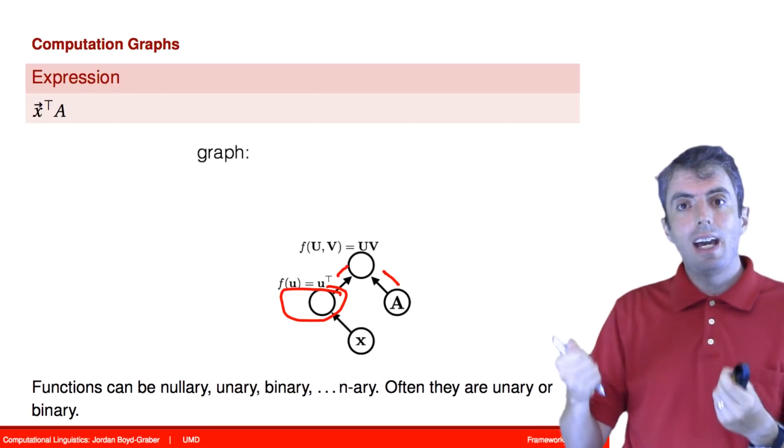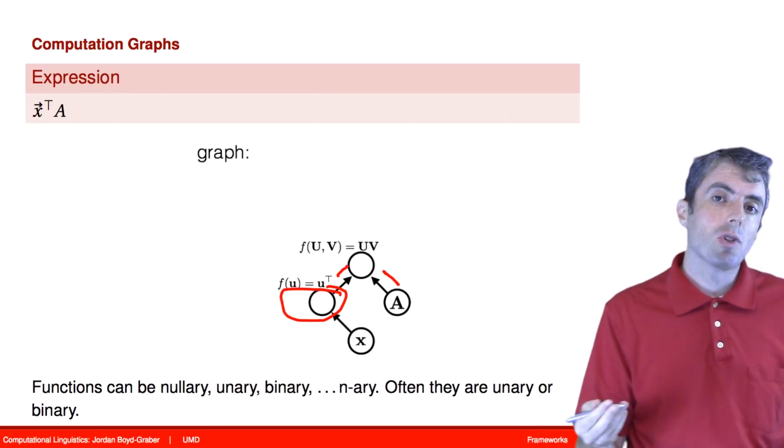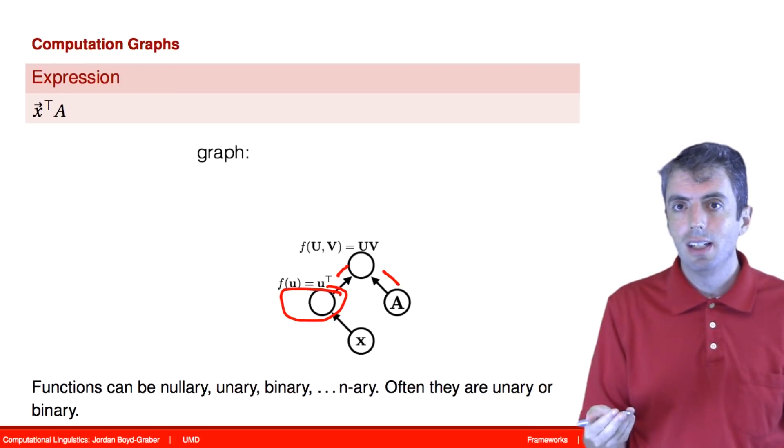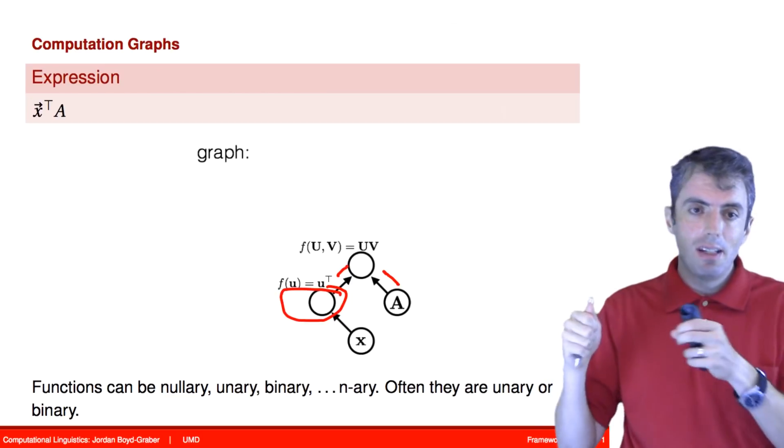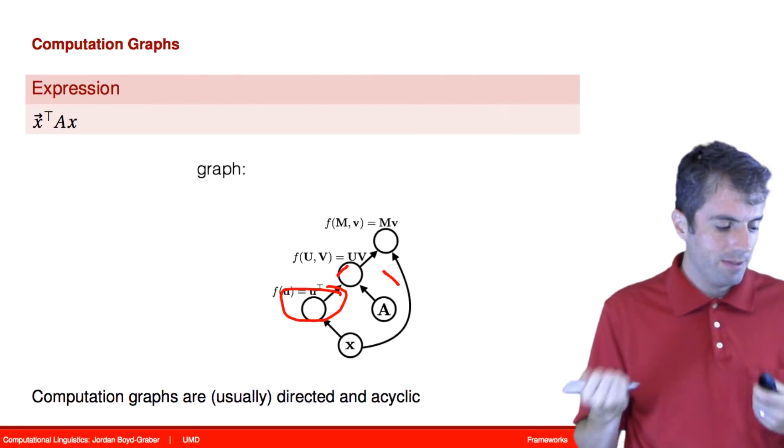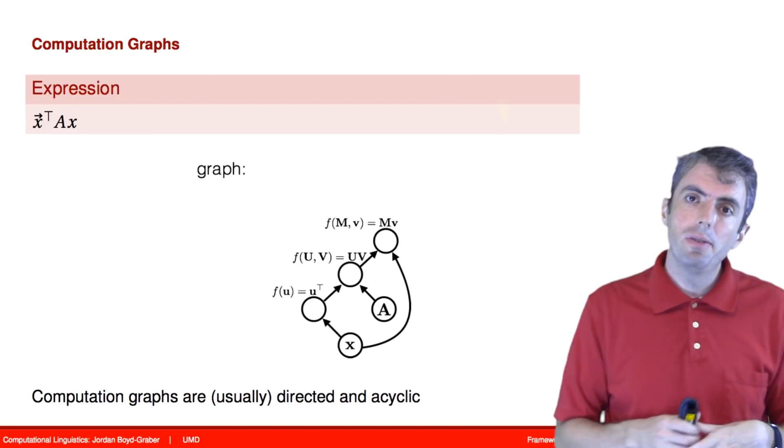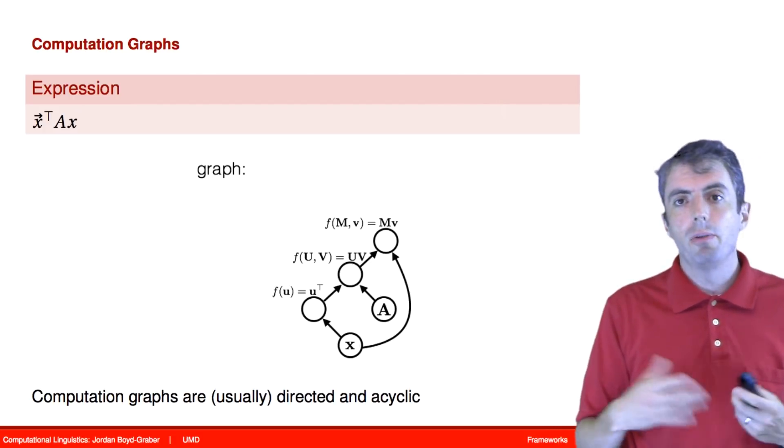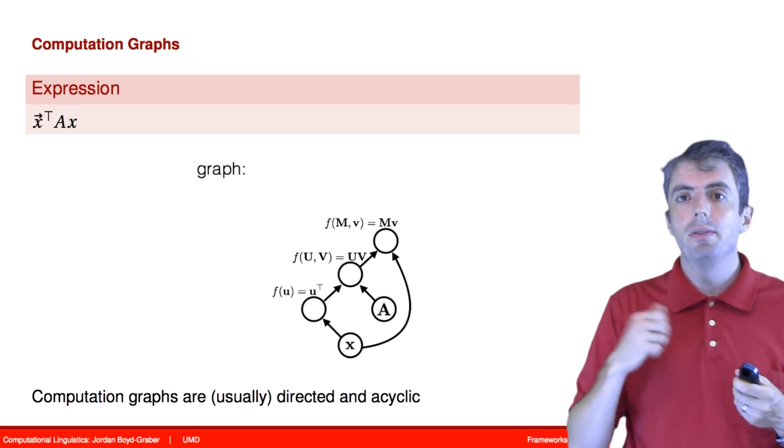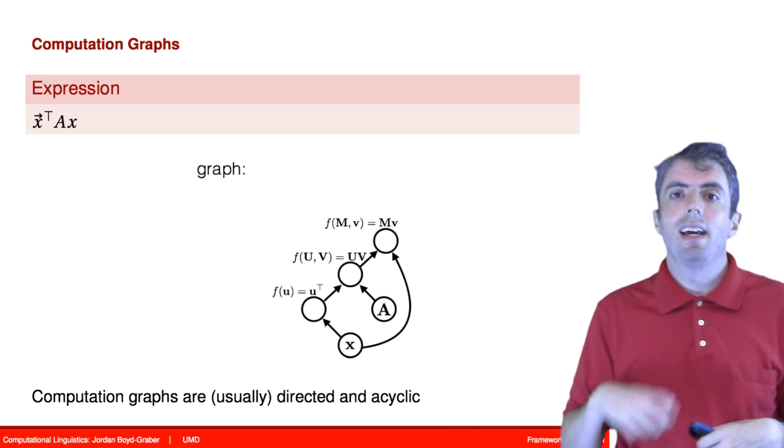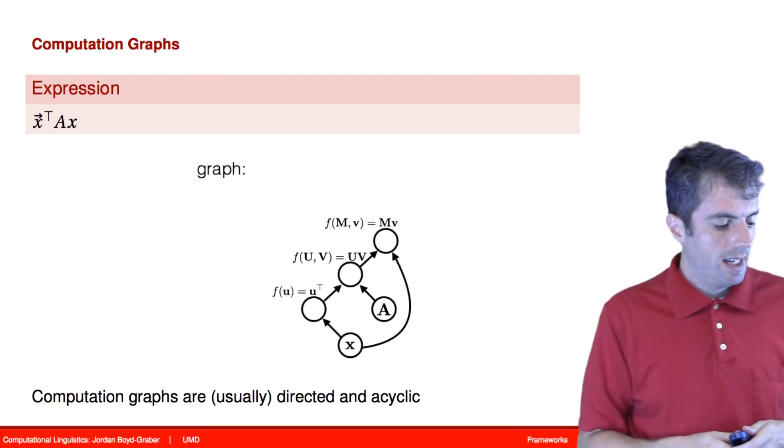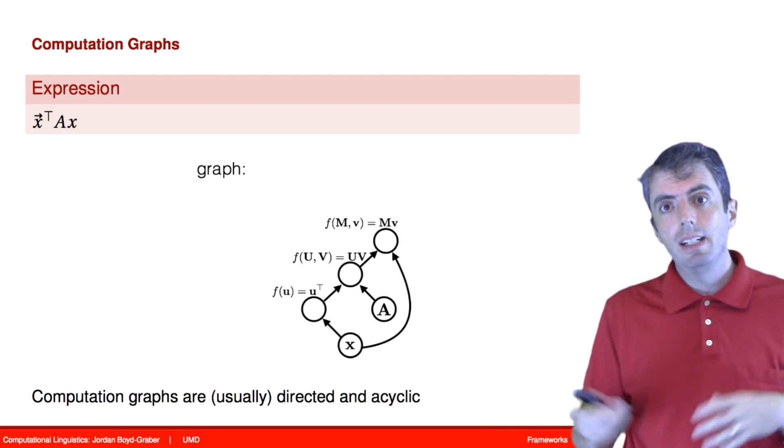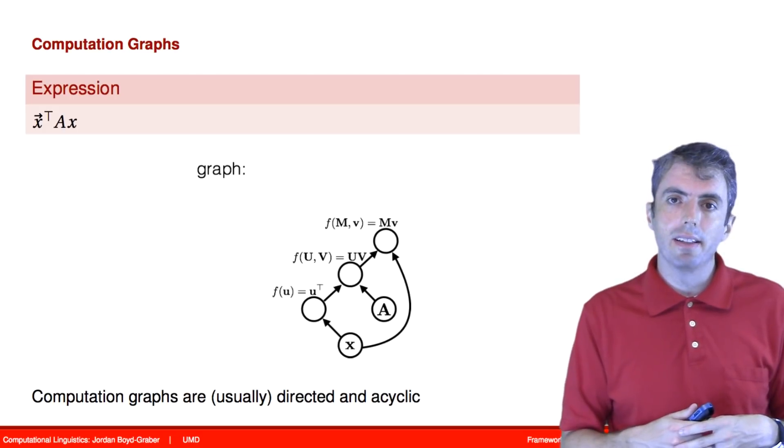And just as we had to keep track of the gradient with respect to a single variable, now each of these edges have to keep track of the gradient with respect to different variables. We can also reuse expressions in these computation graphs. So we can have x transpose A x. And so that x gets reused twice in the computation graph. And now our tree becomes a directed acyclic graph.